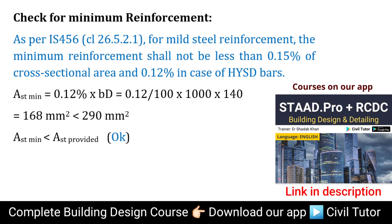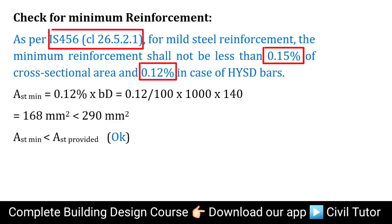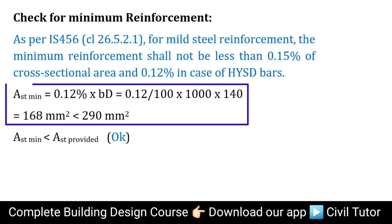We need to check if the provided area of steel satisfies the criteria of minimum reinforcement. As per IS 456-2000, for mild steel reinforcement, the minimum reinforcement shall not be less than 0.15% of the cross-sectional area, and 0.12% in case of HYSD bars. Hence, minimum AST = 0.12% × B × D = 0.12% × 1000 × 140 = 168 mm², which is less than the provided area of reinforcement of 290 mm². Hence, satisfying the criteria.